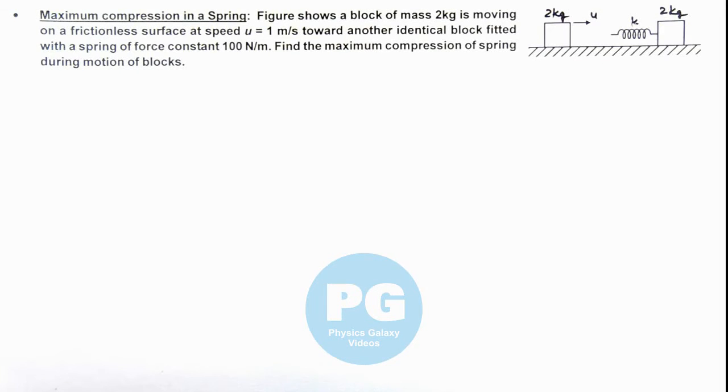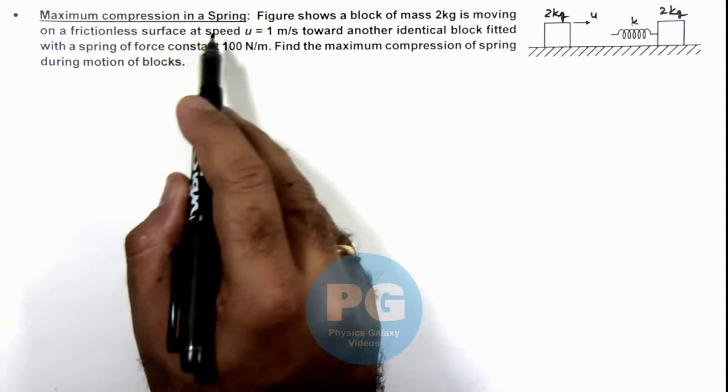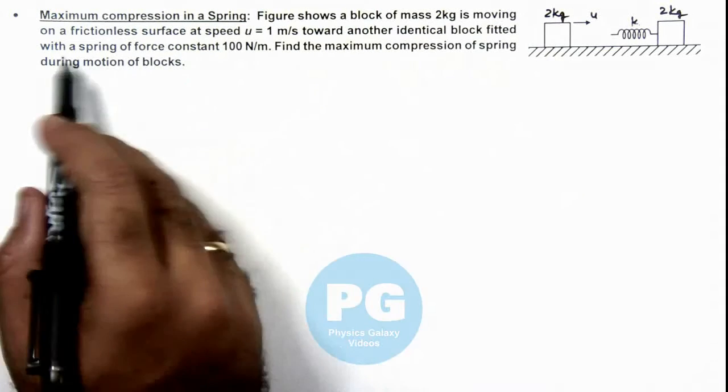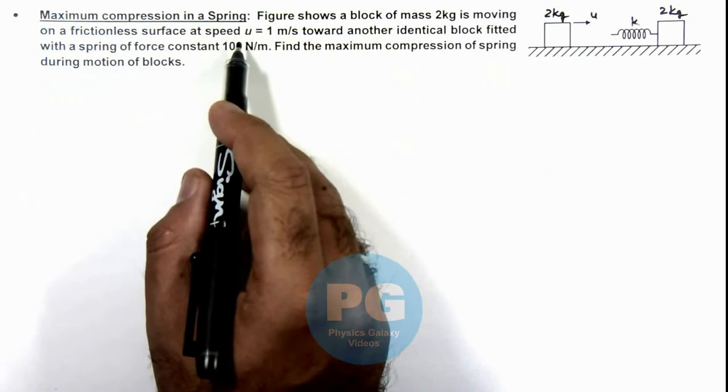In this illustration we'll analyze the maximum compression in a spring. Here the figure shows a block of mass 2 kg moving on a frictionless surface at a speed of 1 meter per second.